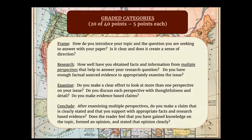These are the four categories you are going to be graded on in terms of the paper itself. You will also get 20 points for going through the process of researching your paper and writing a rough draft. Once you show me a completed research matrix and a completed rough draft, you will automatically have earned 20 of the 40 points for this assignment. The other 20 points are for the paper itself, and each of these four categories represents five points each.